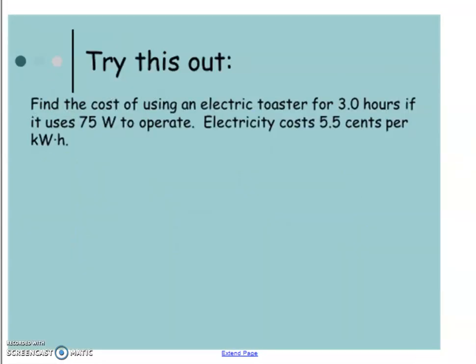Okay, so try out this last one, pause the video, give it a try. So we're finding the cost of an electric toaster that's being used for three hours and it takes 75 Watts to operate. And the cost is 5.5 cents per kilowatt hour.